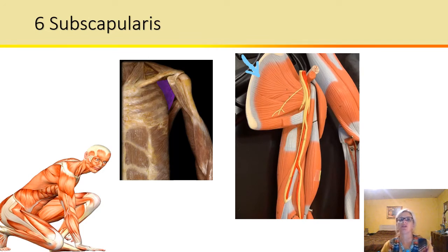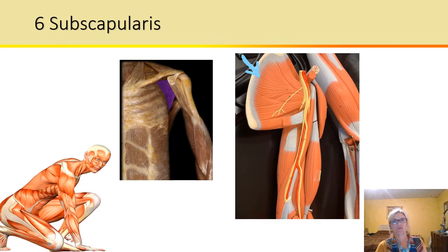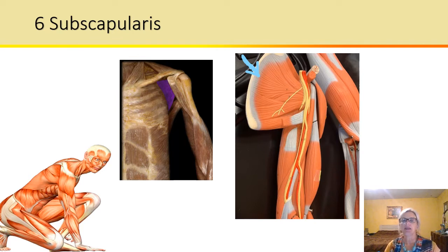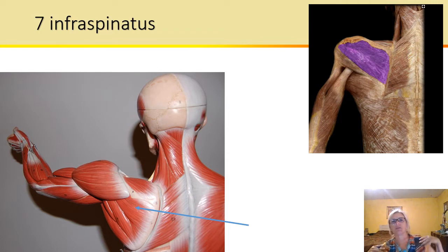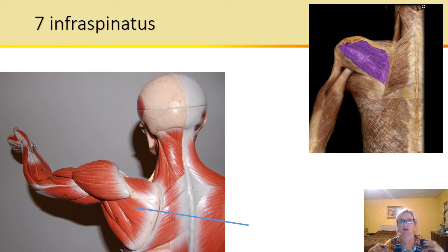All right, so next we have the subscapularis. Sub means below, scapula refers to the shoulder blade, so this is the under-the-scapula muscle. This medially — toward the midline of the body — rotates the arm and assists with extension of the arm. All right, so infraspinatus: infra means below, and spinatus refers to the spine of the scapula, and this laterally rotates the arm.